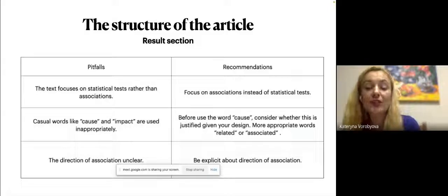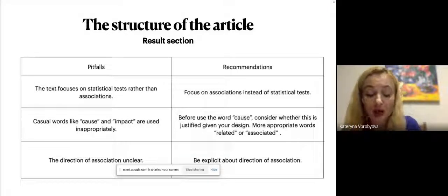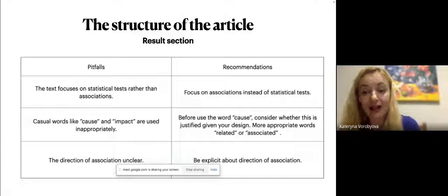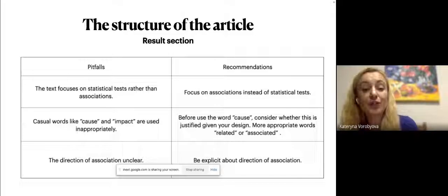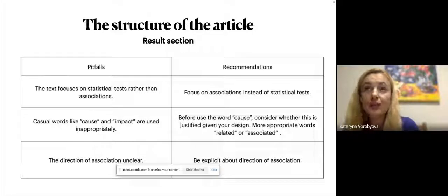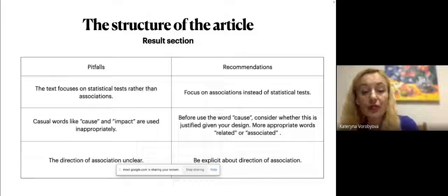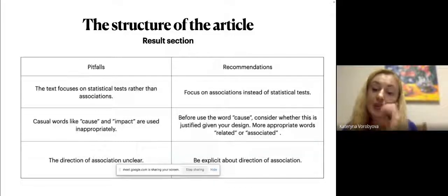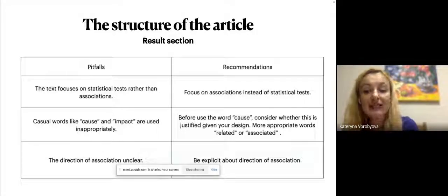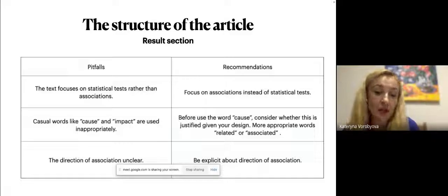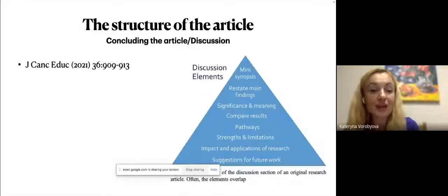So next is the pitfalls, which is casual words like cause and impulse are used inappropriately. Only some study design and analytic approach enable researchers to make causal claims. So before you use the word cause, consider whenever you justify giving your design. Maybe words can be used as associated or related, maybe more appropriate and the direction of association is unclear. So be explicit about direction of association instead of independent, dependent variables. As I already mentioned, do not just explain the accepted, rejected, explain association.